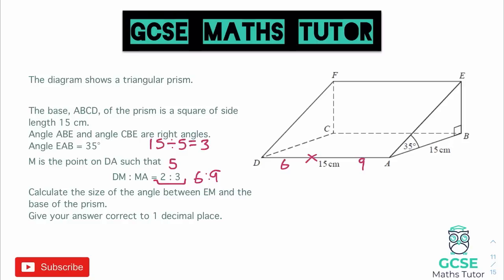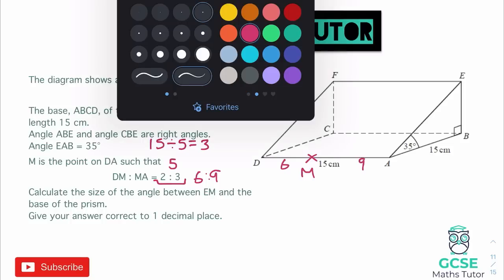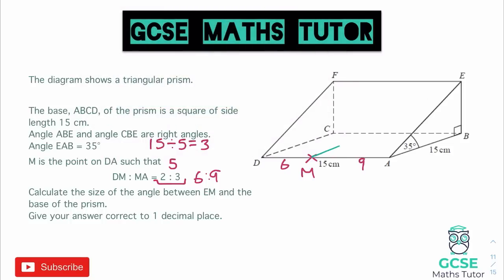It says calculate the size of the angle between EM and the base of the prism. So this is point M. So to find the angle, we're going to want to draw a triangle inside there. So we have from M to E, we have that line. We then have the height from E to B, and then we'd also want to connect M to B.